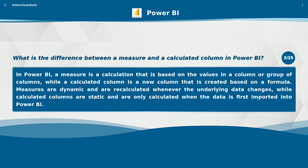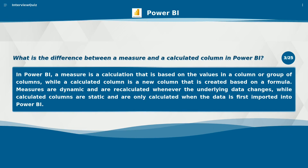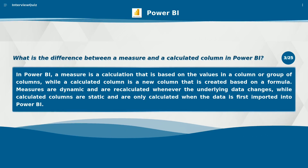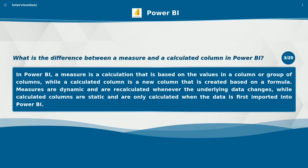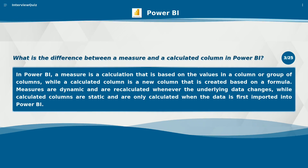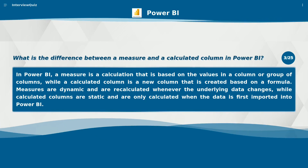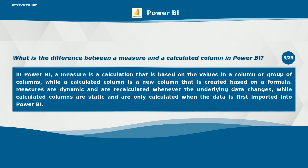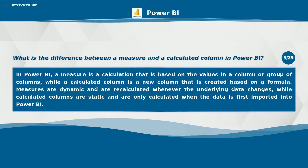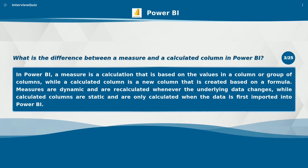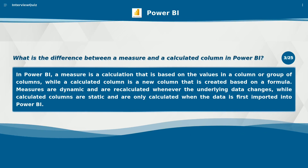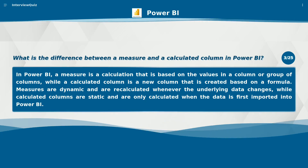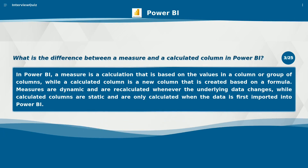What is the difference between a measure and a calculated column in Power BI? In Power BI, a measure is a calculation that is based on the values in a column or group of columns, while a calculated column is a new column that is created based on a formula. Measures are dynamic and are recalculated whenever the underlying data changes, while calculated columns are static and are only calculated when the data is first imported into Power BI.